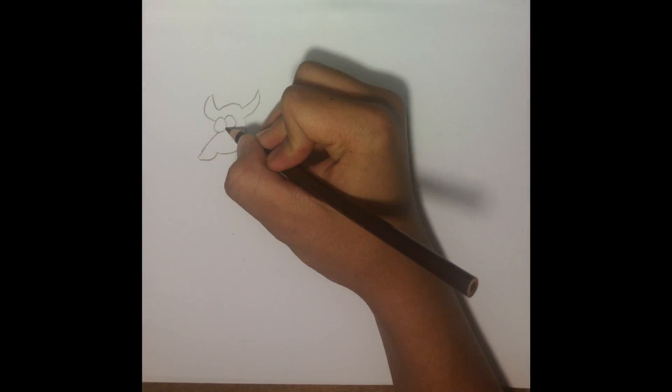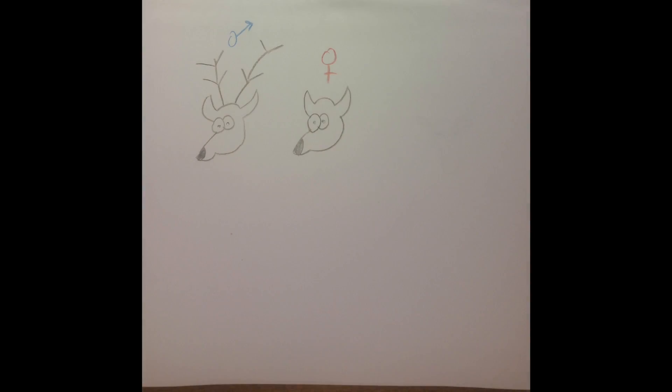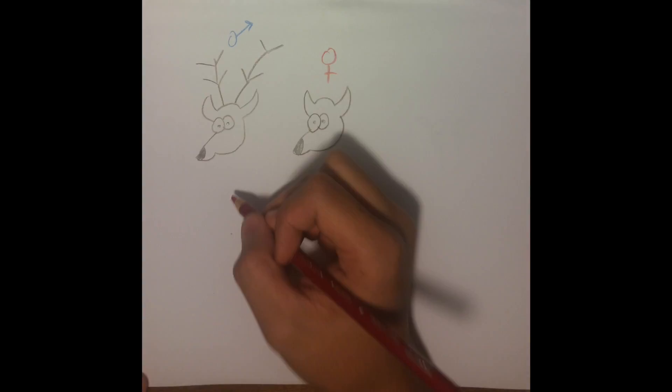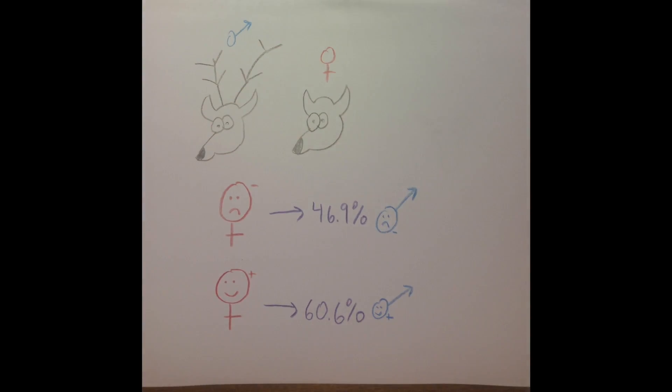In nature, we see that the Trivers-Willard hypothesis also holds for certain populations, like red deer in Scotland, for example. 46.9% of births by low-ranking deers were to males, while 60.6% of births by high-ranking deers were to males, as a result of the deer's competitive mating system.